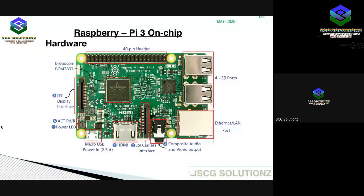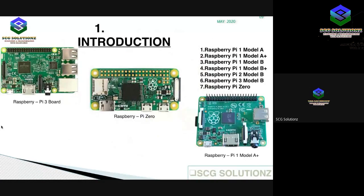Raspberry Pi is a small single-board computer. By connecting peripherals like a keyboard, mouse, and display, it acts as a mini personal computer. It is popularly used for real-time image and video processing, IoT-based applications, and robotic applications.